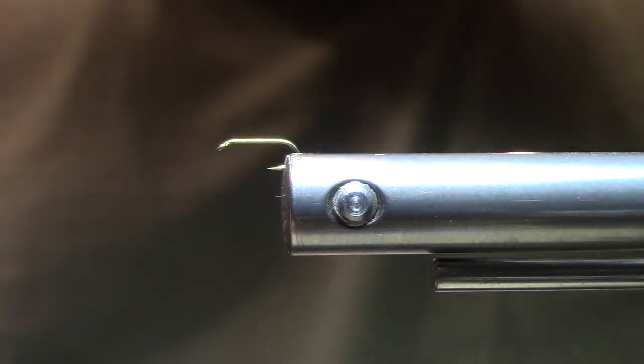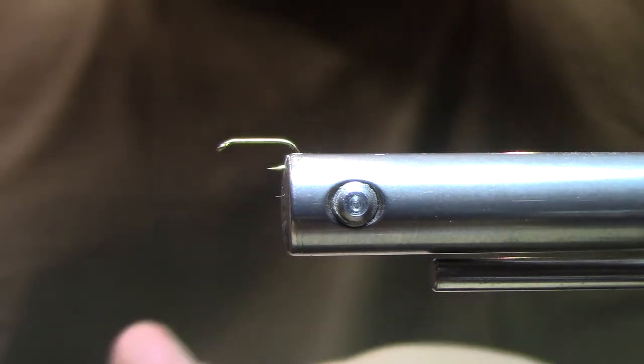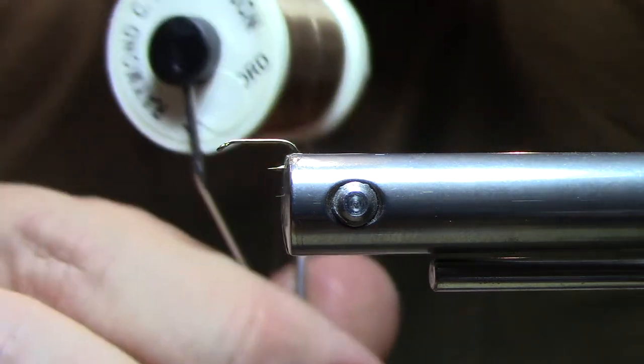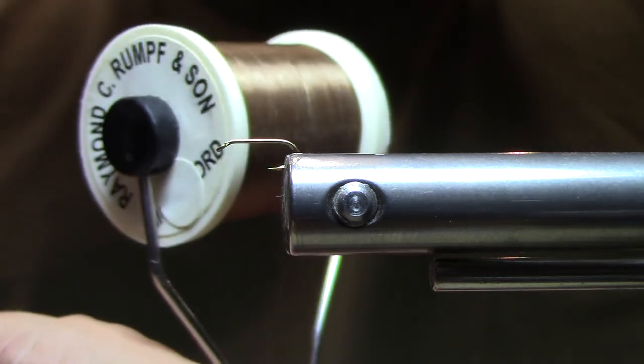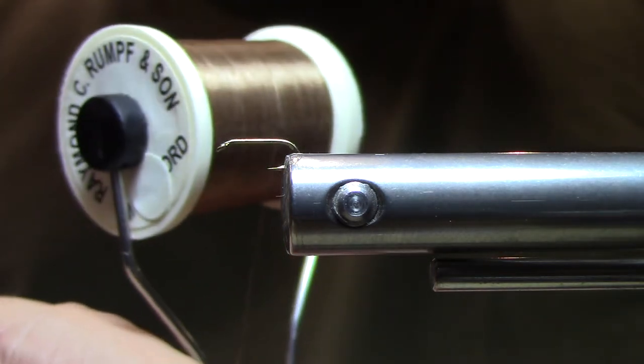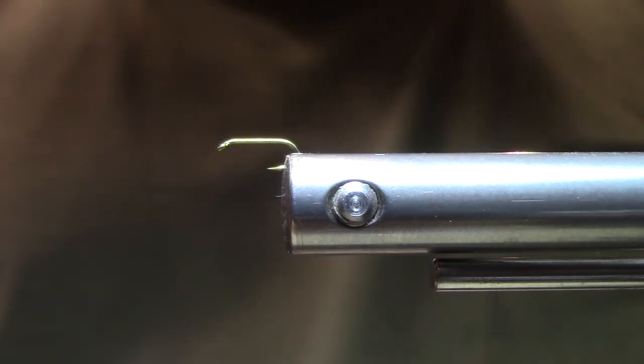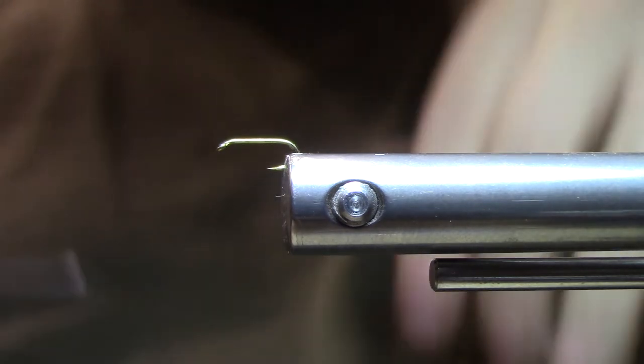The other material is the tying thread, and that is a material called monochord. This is brown monochord, and it is by Rumpf, R-U-M-P-F. It's very important that monochord is used in this pattern, and I'll explain why in a bit.